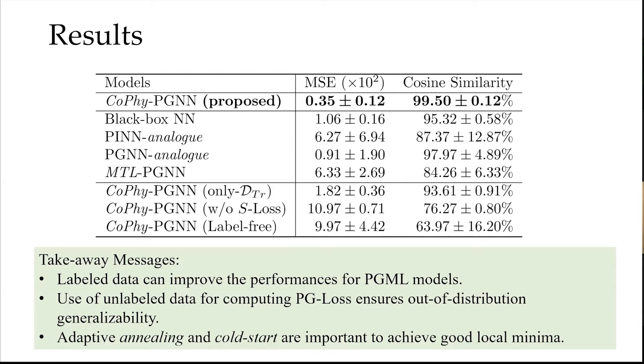CoPhy-PGNN is our proposed method, all others are baselines. The black box CNN was trained using the labeled data. PINN and analog were trained using only physics laws without using any label data. PGNN analog trained on both physics laws and MSE labeled on the label data but without using any adaptive tuning method. Multitask learning PGNN will use a cyclic learning, a cyclic coefficient between the two loss terms. The ablations will have only trained on the D_TR and also one of them will have no spectrum loss and one of them will be label free which means without using any label data.